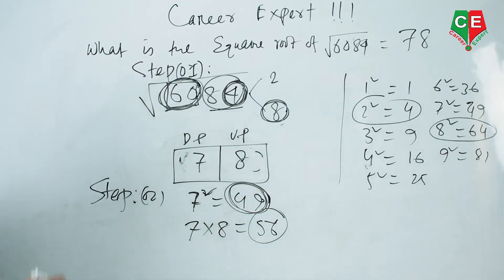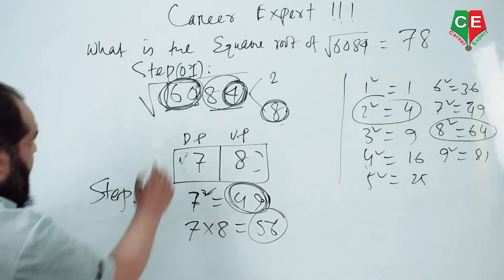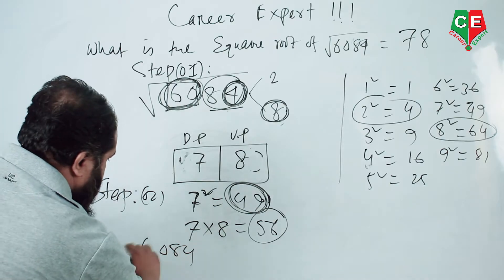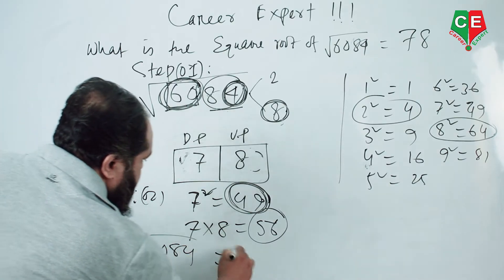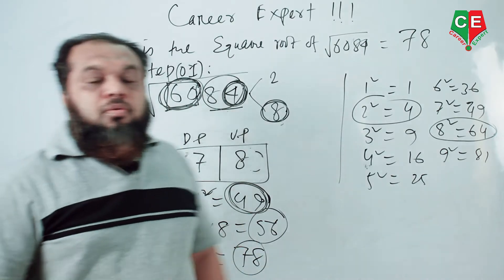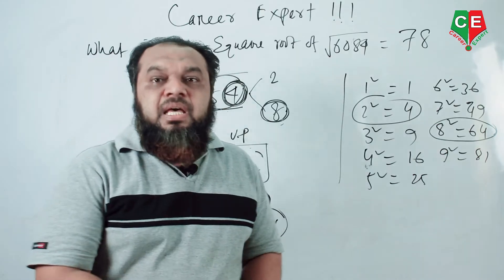The unit place is 8 and the tens place is 7, so the square root of 6084 equals 78. This is the answer.